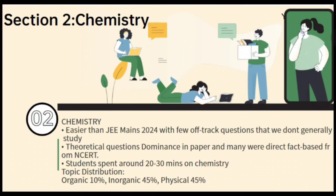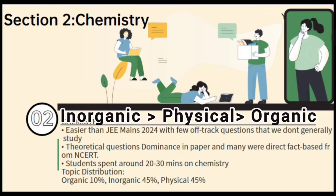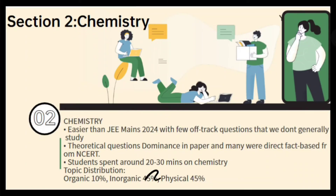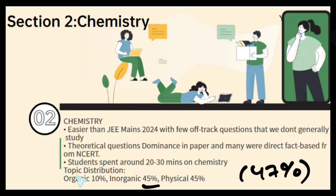Now let's jump to the Chemistry section. Inorganic and Physical chemistry was holding more weightage compared to the Organic part. The average time candidates spent on this section was around 30 to 35 minutes. In both shifts, Inorganic held the highest weightage — roughly about 47%, which is much larger compared to the Organic part.